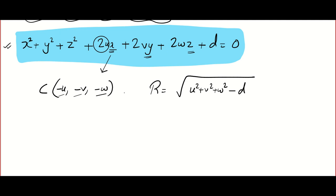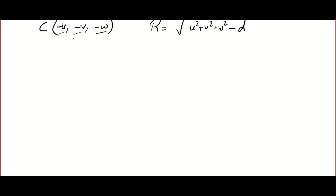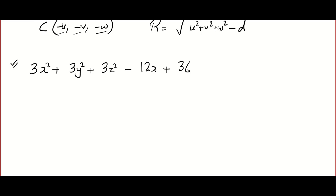Let's do one very simple question based on this. Find the center and radius of the sphere: 3x² + 3y² + 3z² − 12x + 36y − 24z + 21 = 0.